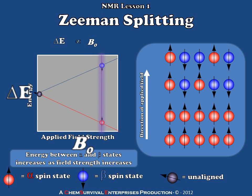This demonstration is a gross exaggeration of the populations, just to get the point across. In truth, we can calculate the actual populations using the Boltzmann equation. When you apply the Boltzmann equation to situations using a typical NMR spectrometer, you'll discover that these population differences are very, very small — less than one percent. Nonetheless, we have to have that population difference and that energy difference, or Zeeman splitting, otherwise we couldn't do NMR.